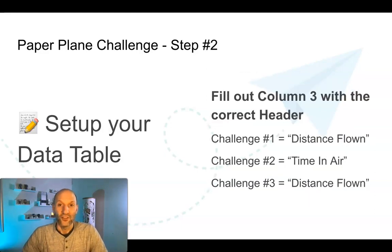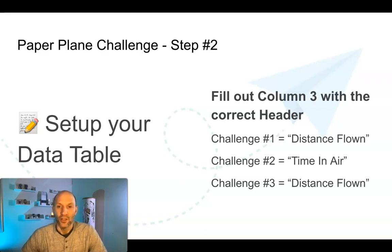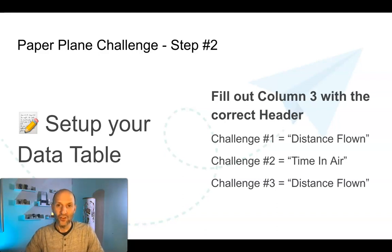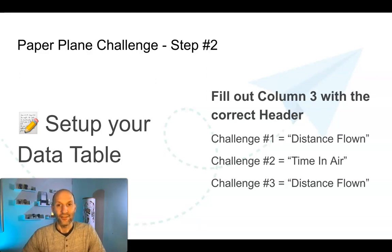Once you've chosen your challenge, you'll want to set up your data table to collect the information based on your challenge. If you scroll down to the data table, you'll find that column number three is blank — depending on your challenge, that will change what you put in that header. If you chose challenge one, type in 'distance flown.' If you chose challenge two, type 'time in the air.' If you chose challenge three, type 'distance flown.'